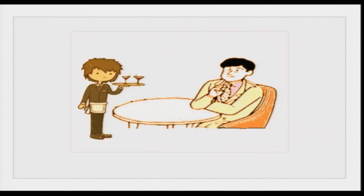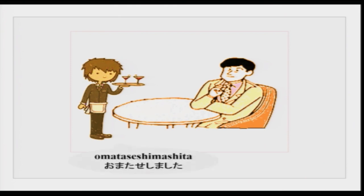These phrases are used all the time at restaurants. The waiter has taken the order, confirmed it, and gone. After some time he comes back with whatever was ordered. As Japanese people are very polite, he says omatase shimashita — I am sorry to have kept you waiting for so long for your order.